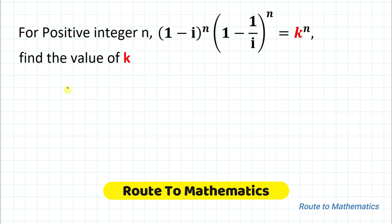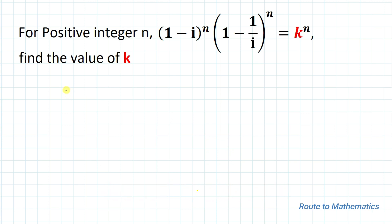Hello everyone, welcome to Root 2 Mathematics. In this video we are going to solve an equation involving complex numbers. The given question is: for positive integer n, (1 - i)^n multiplied with (1 - 1/i)^n equals k^n. We are asked to find the value of k. Without any delay, let's start the solution.